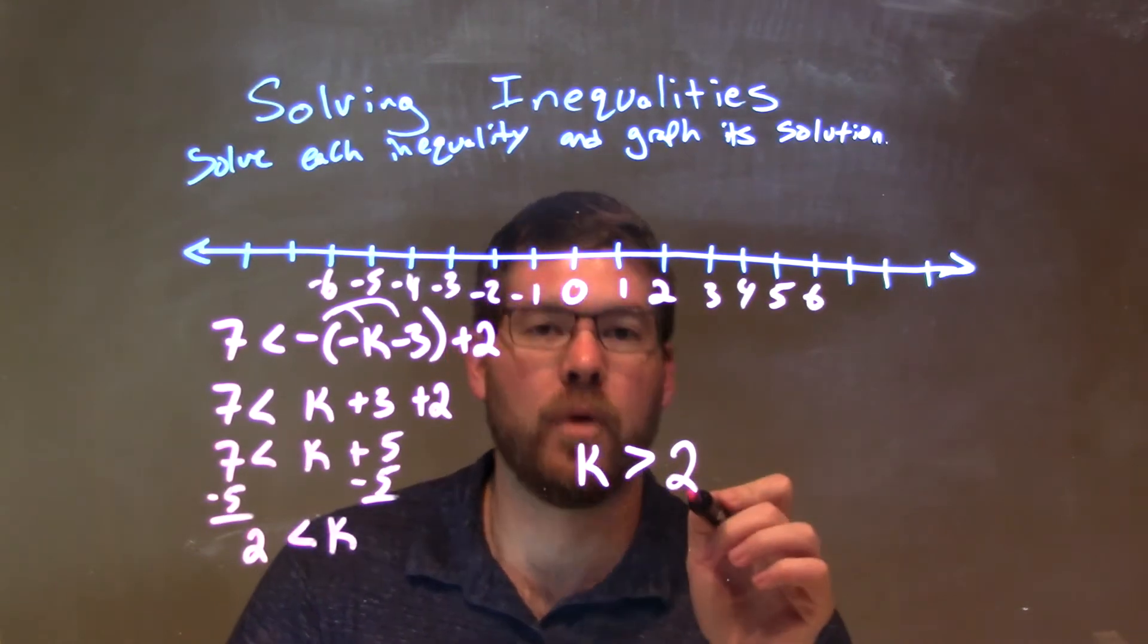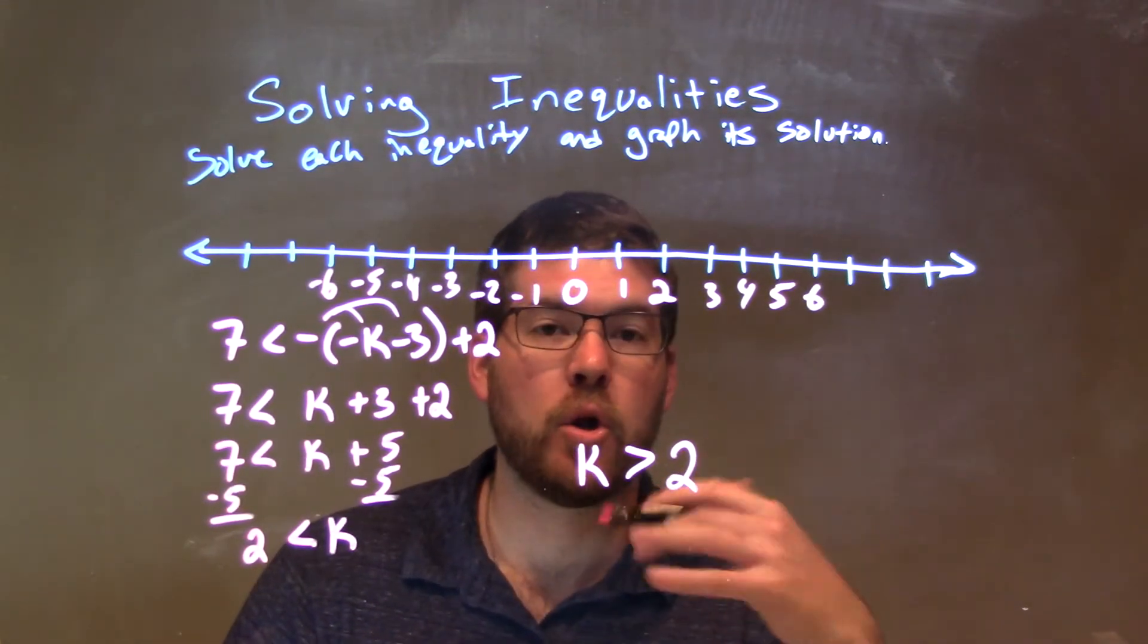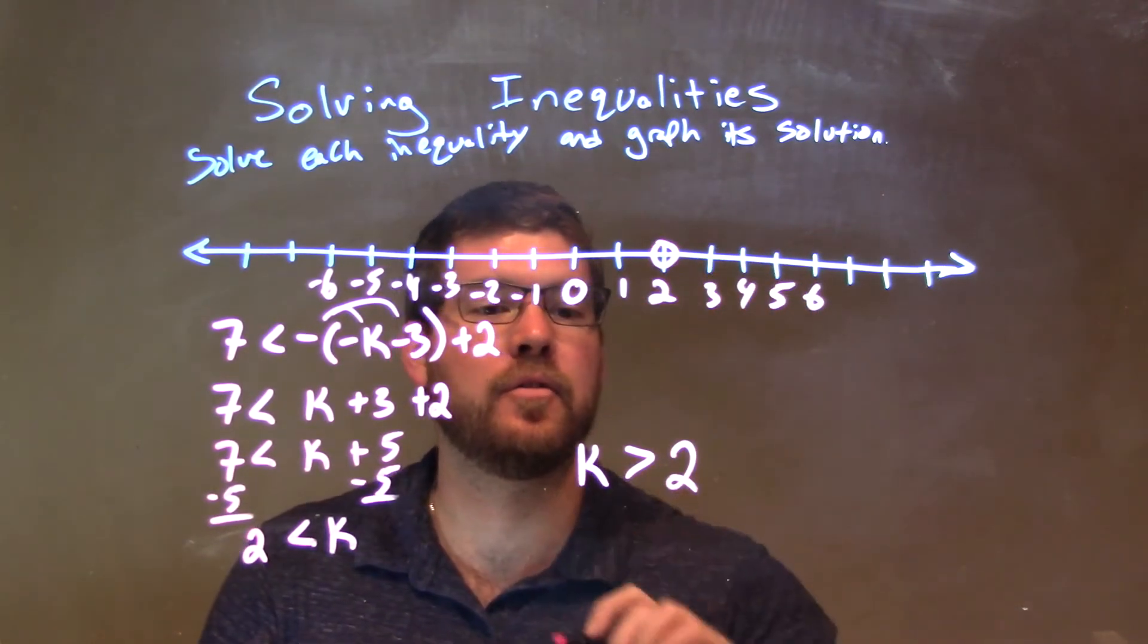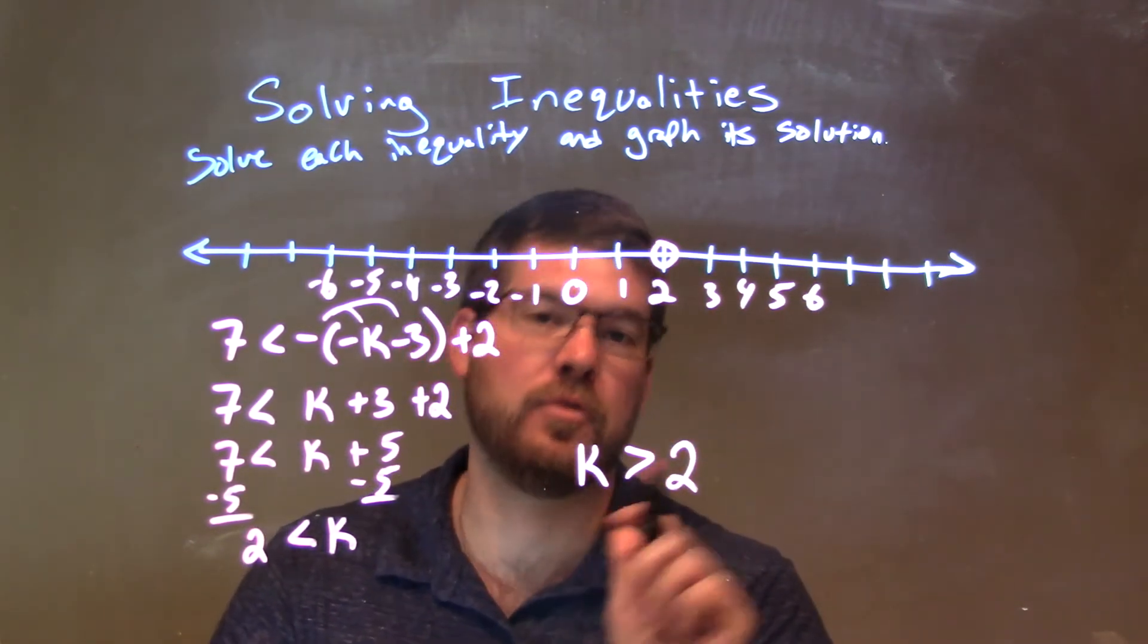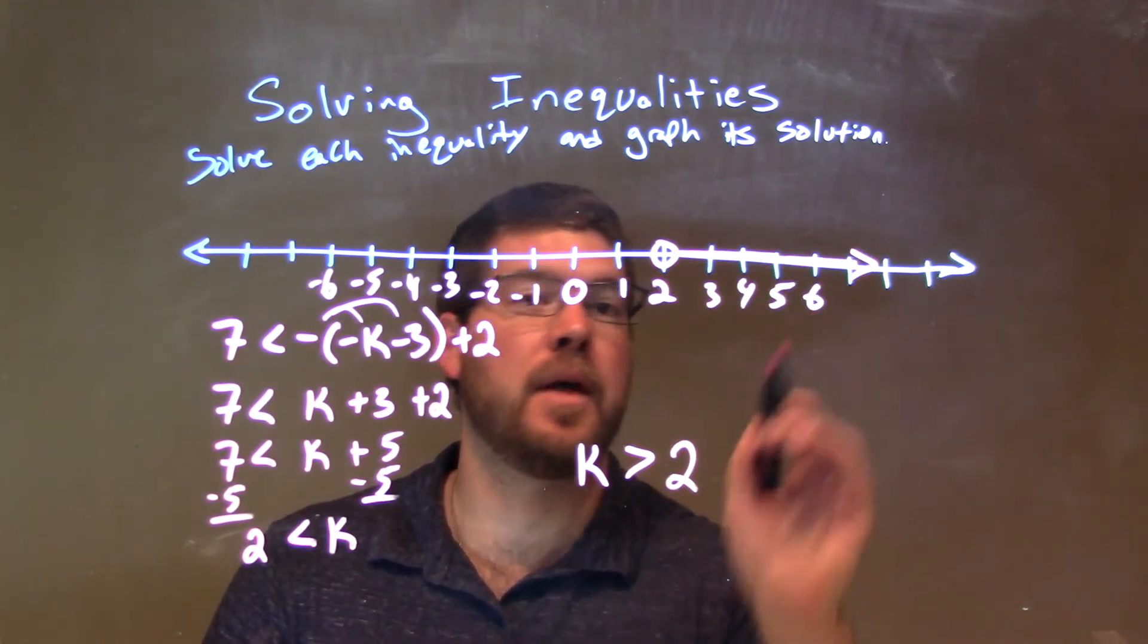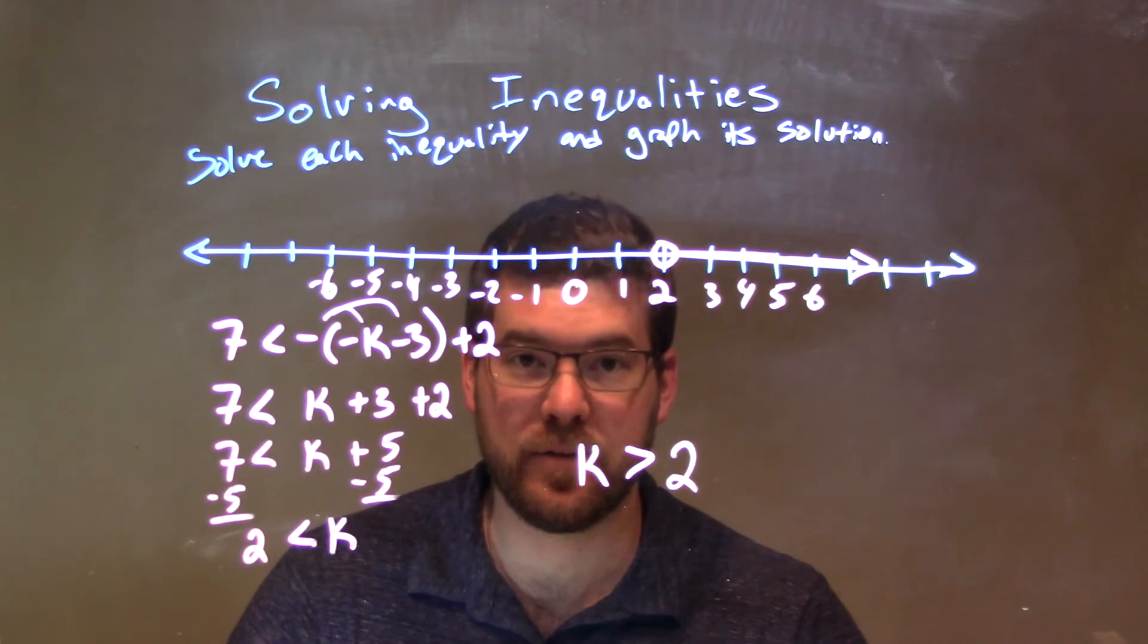K is greater than 2, we have an open circle at 2 because it's not equal to 2. Since k is greater than 2, we shade to the right. And there we have our final answer.